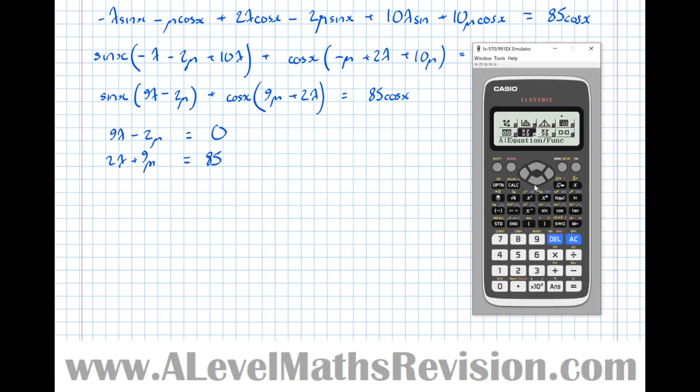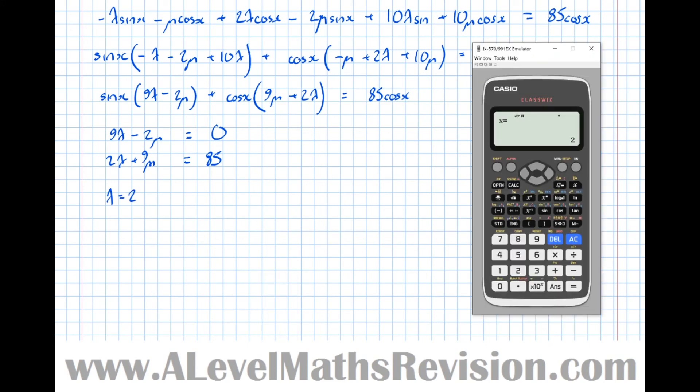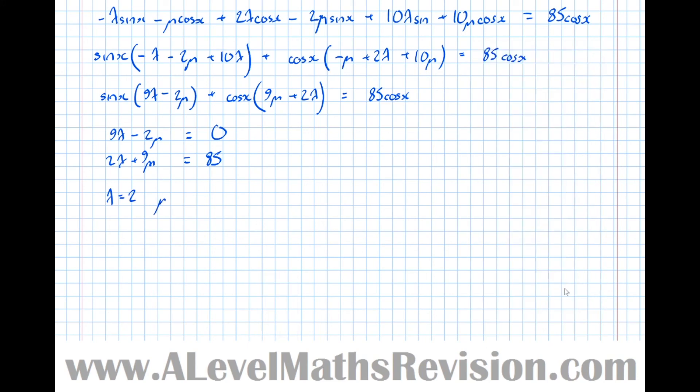And no messing about, straight into the simultaneous equation solver on our calculator. Simultaneous equation, number of unknowns is 2. So 9x minus 2 mu, so 9x minus 2y equals 0. Oh, infinite solution, I've pressed the wrong button there. And then second one, 2 lambda plus 9 mu is 85. So we get that x or lambda equals 2. And that mu equals 9.